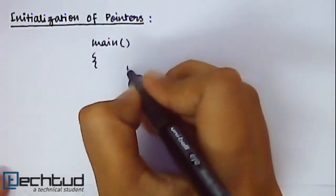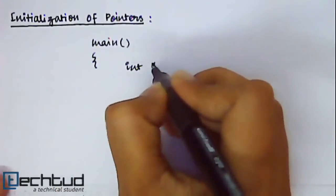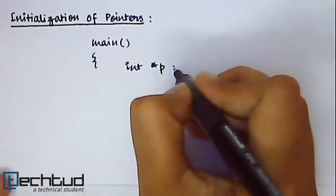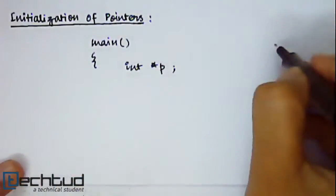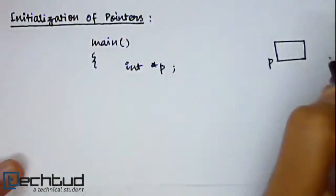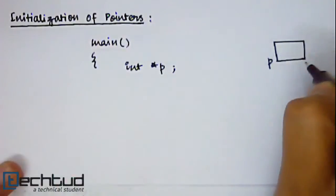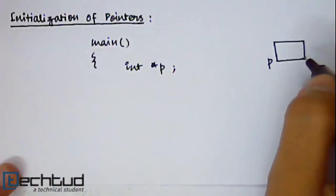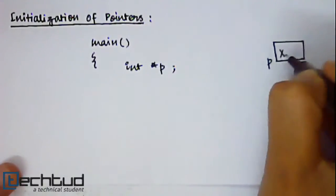In main function you have declared a pointer variable. So what happens? In memory you reserved a space named P and there is no value yet. So you know that in C language if you don't assign some value inside a variable it will contain garbage values, right?